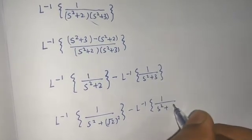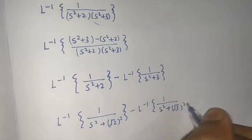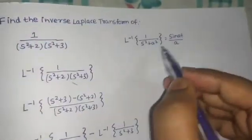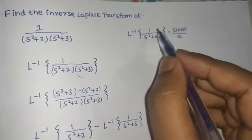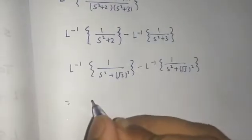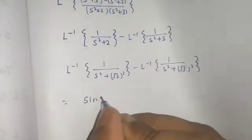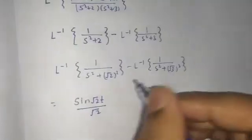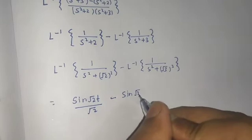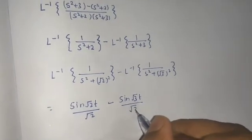Using the formula L⁻¹{1/(s²+a²)} = sin(at)/a, this gives sin(√2·t)/√2 and this gives sin(√3·t)/√3.